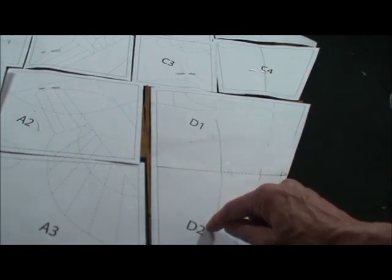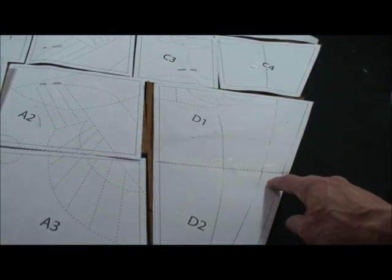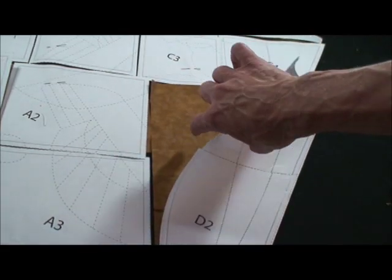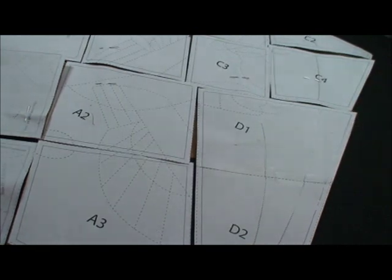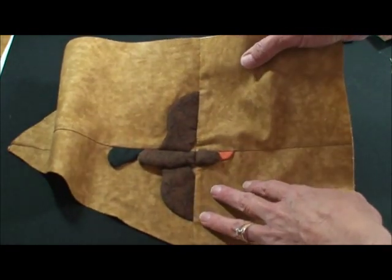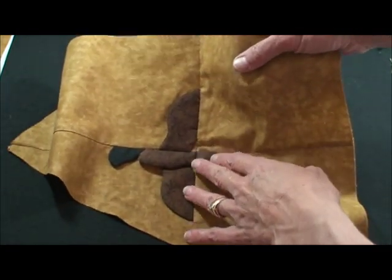This D1 and D2 was taped together before I cut it out so that piece is one piece. We're going to show you now how to make this small duck that looks like it's in the background of this quilt. Very simple.